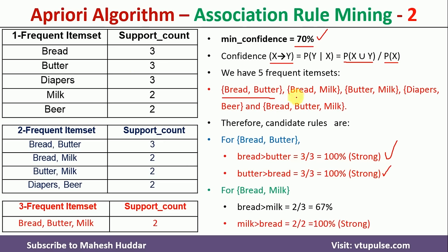Next, bread and milk: the two rules are bread → milk and milk → bread. Bread and milk were bought together 2 times; bread appears 3 times. So 2/3 = 67% — not a strong rule. For milk → bread: milk and bread were bought together 2 times; milk appears 2 times. So 2/2 = 100% — it is a strong rule.